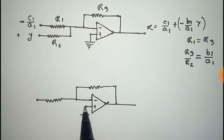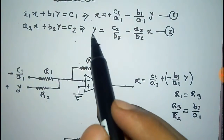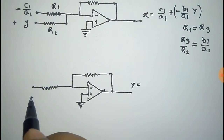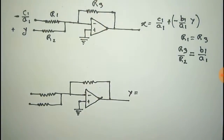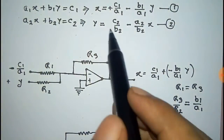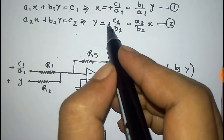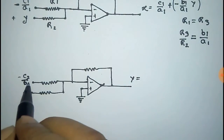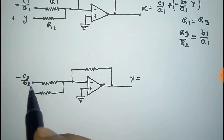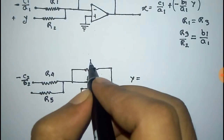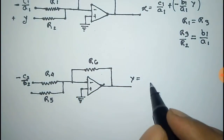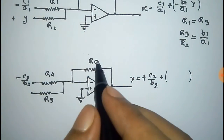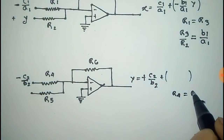For the second op-amp, y is the output, so give y at the output. It will add two inputs. The first input is the constant c2/b2. Since it is plus in the equation and this is an inverting op-amp, we give −c2/b2 at the input so the output becomes +c2/b2. For the resistance, r4 = r6 because nothing is multiplied with c2/b2.